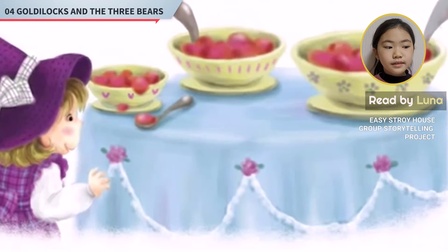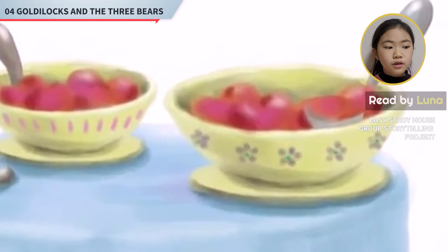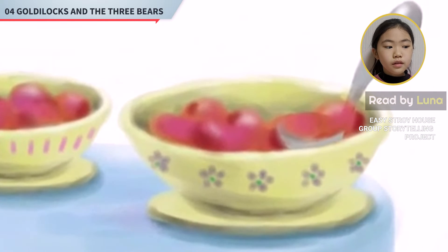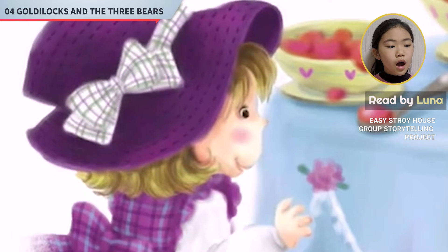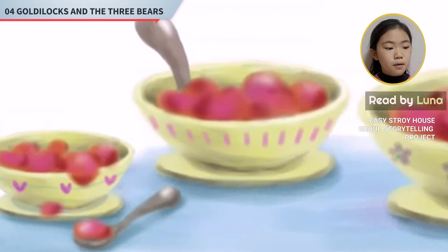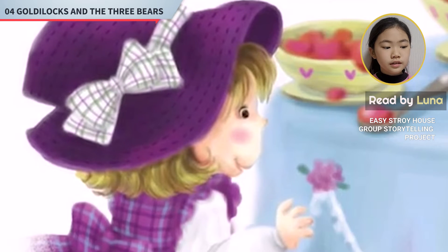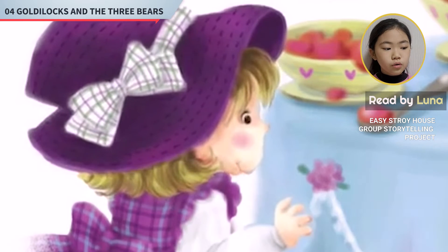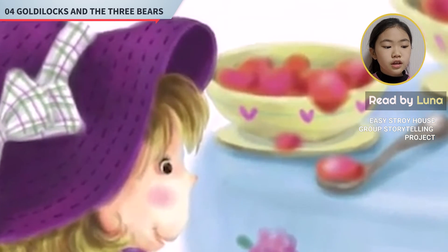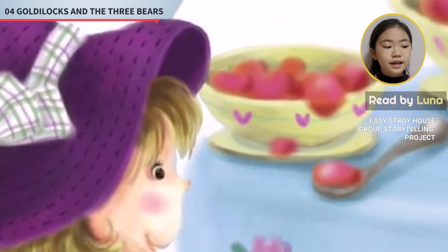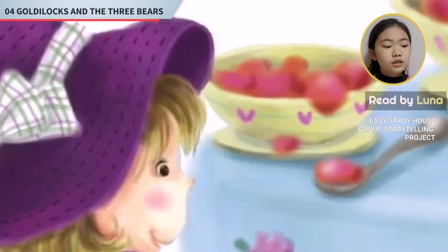She sees three bowls of porridge on the table. She eats the porridge in the big bowl. She says, 'Too hot.' She eats the porridge in the smaller bowl. She says, 'Too cold.' She eats the porridge in the little bowl. She says, 'Just right.'